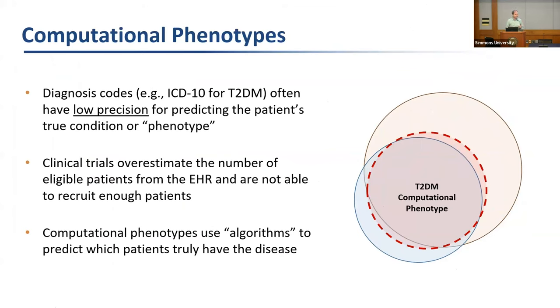We're trying to create computational phenotypes — algorithms that can target patients who truly have the disease. I put 'algorithms' in quotes because algorithms mean different things to different people. Some phenotyping algorithms follow a simple set of rules, while others leverage much more complex machine learning methods.